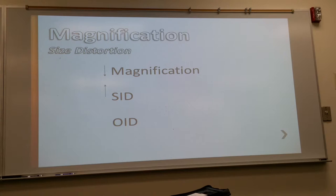And we know with OID, if we want to decrease magnification, what do we have to do to the OID? Decrease it. So we want the body part as close to the patient, the patient as close to the image receptor as possible. There are times that we can't do that.